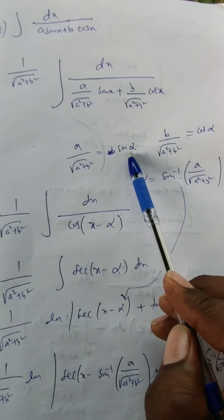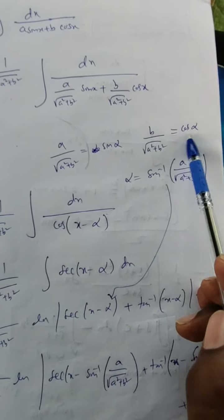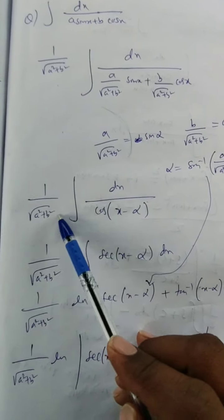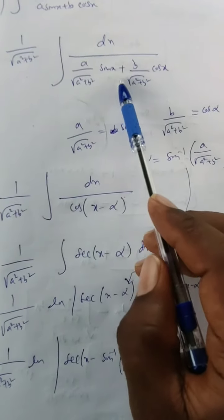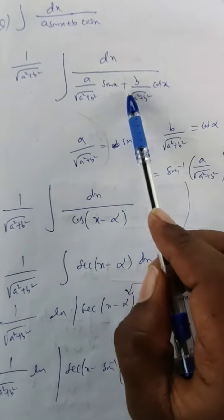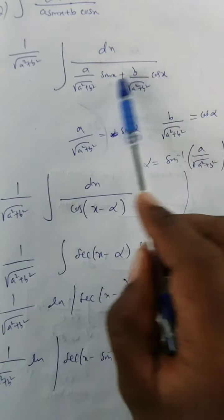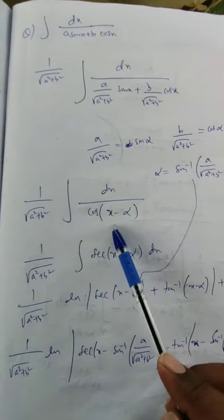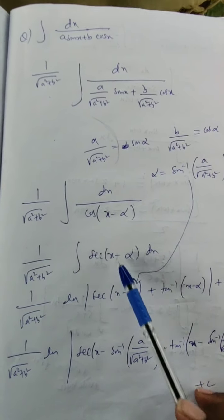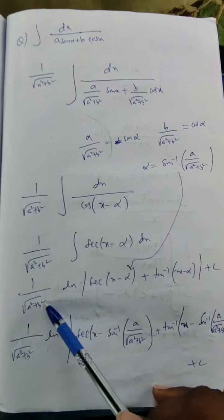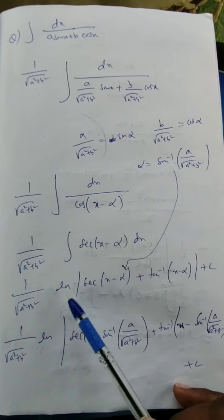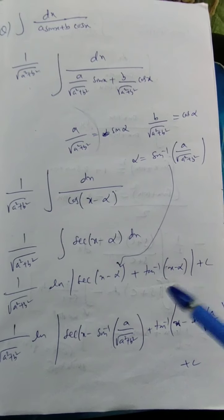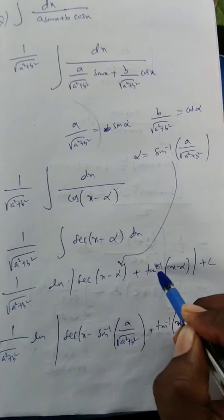Then α = sin⁻¹(a/√(a² + b²)) or equivalently cos⁻¹(b/√(a² + b²)). The denominator becomes sin x · sin α + cos α · cos x = cos(x − α) by the cos(a − b) formula. So the integral is 1/√(a² + b²) · ∫ sec(x − α) dx, which gives 1/√(a² + b²) · ln|sec(x − α) + tan(x − α)| + C.